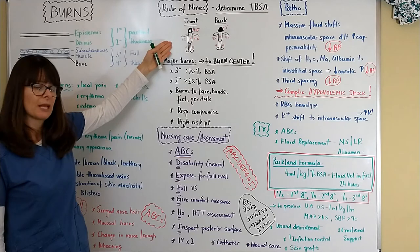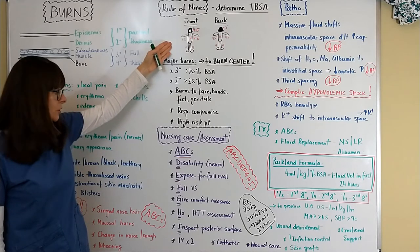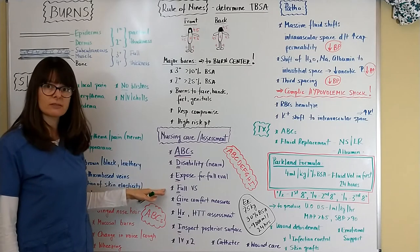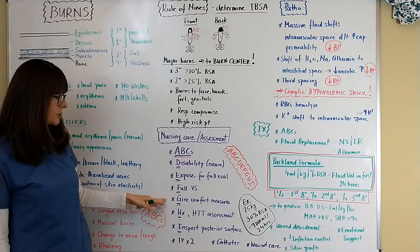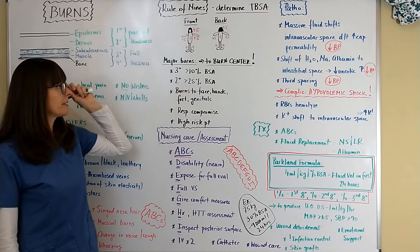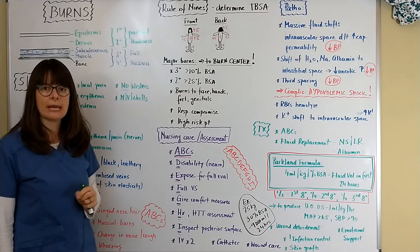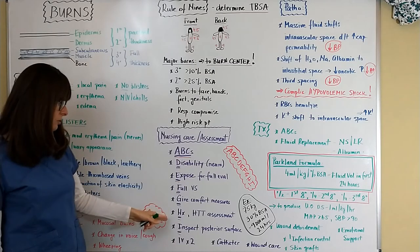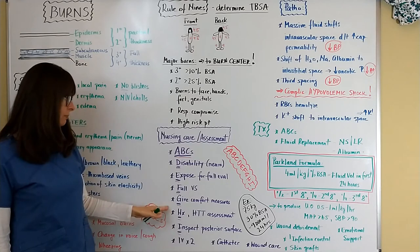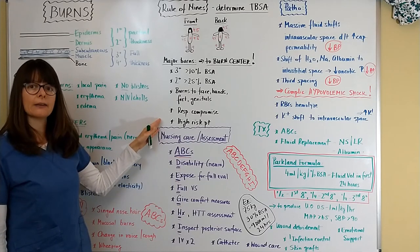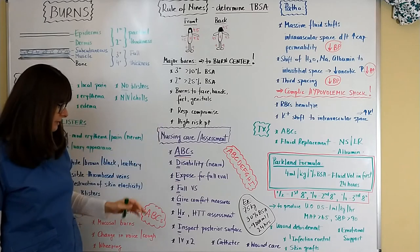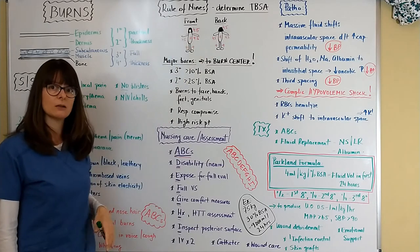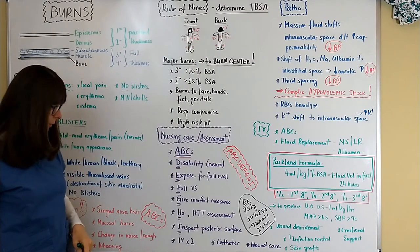F stands for vital signs. G: give comfort measures. Imagine you have a third degree burn of greater than 10 percent of your body surface area, how painful that is, so analgesia is very important here. H goes into history and head to toe assessment, history of the patient to determine if they're high risk or any other underlying comorbidities. I is for inspection of the posterior surface. Again we need to assess the patient in detail front and back to assess what's going on with them.